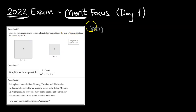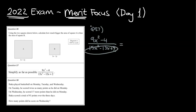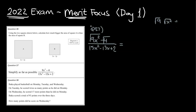We are now on to question number 37 — simplify as far as possible. Let's write down the fraction: x squared minus 4 over 15x squared minus 13x plus 2. The top is nice because both terms are squares — that's difference of two squares. The square root of x squared is x, and the square root of 4 is 2, so those are going to be my brackets. It's going to be 3x with a 2 — but that should be 3x, not 9x. So we've got 3x plus 2 times 3x minus 2.